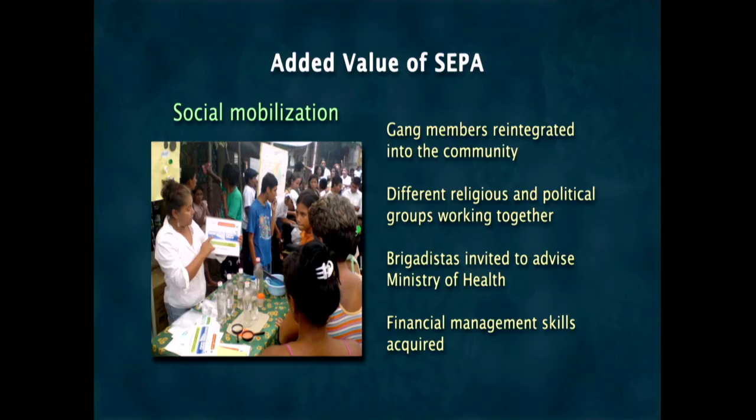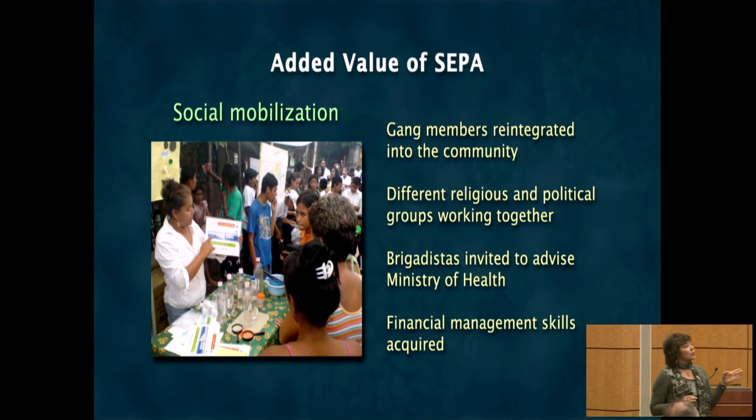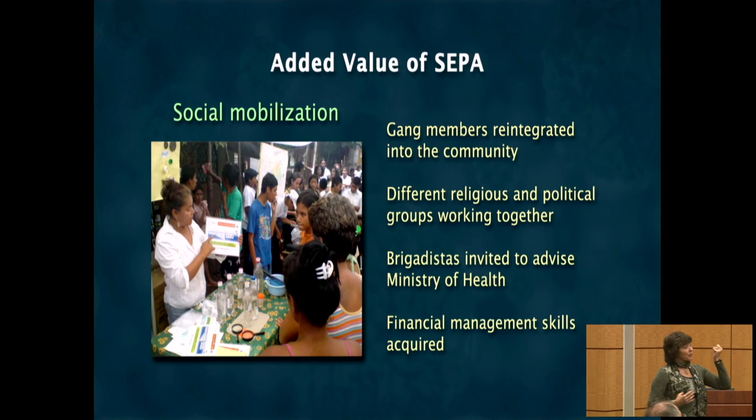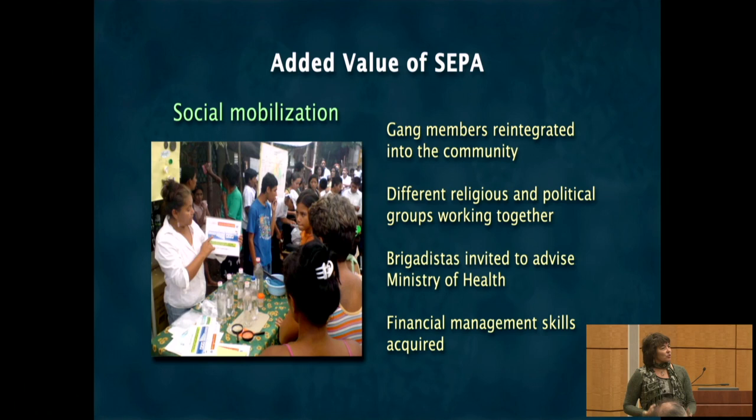An added value is social mobilization beyond dengue control. Communities were mobilized to get sewer lines installed by counting barrels and presenting data to the mayor's office. The platform also addressed domestic violence and sexual violence. Dengue is the banner, but community mobilization becomes much more important for the community across many other issues.